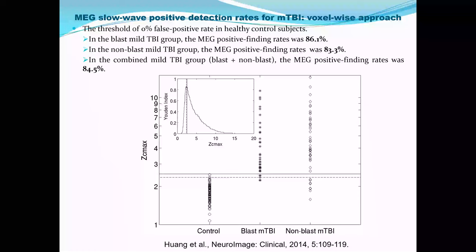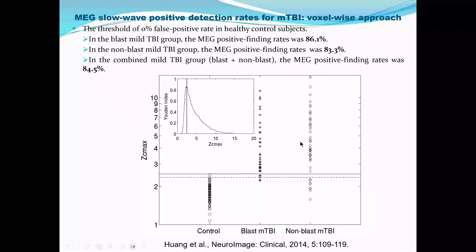You can see the small overlap between the healthy control and the two TBI groups. If you pick a threshold, none of the healthy controls are above it. Then you have 86.1% sensitivity — positive finding rate — for patients with mild TBI due to blast, and 83.3% sensitivity for mild TBI due to non-blast causes.